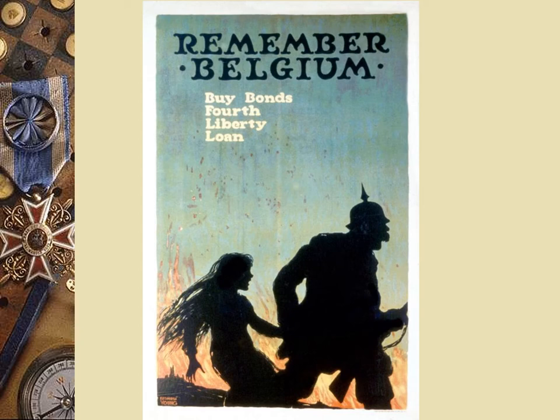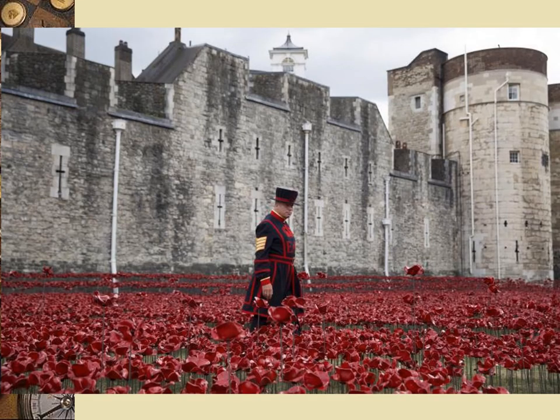In Flanders Fields — there was a very famous poem by a Canadian soldier about Flanders Fields. Flanders became initially the symbol of Germanic horrors, but later became the symbol of the horrors of war generally. The symbol of anti-war is the poppy, especially in England. November 11th, people wear poppies partly because of this poem.